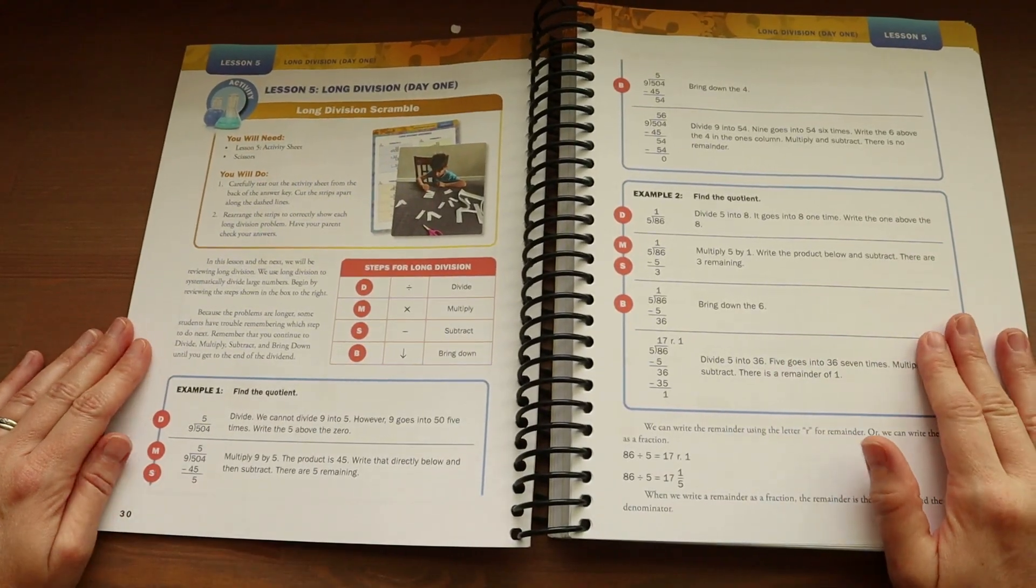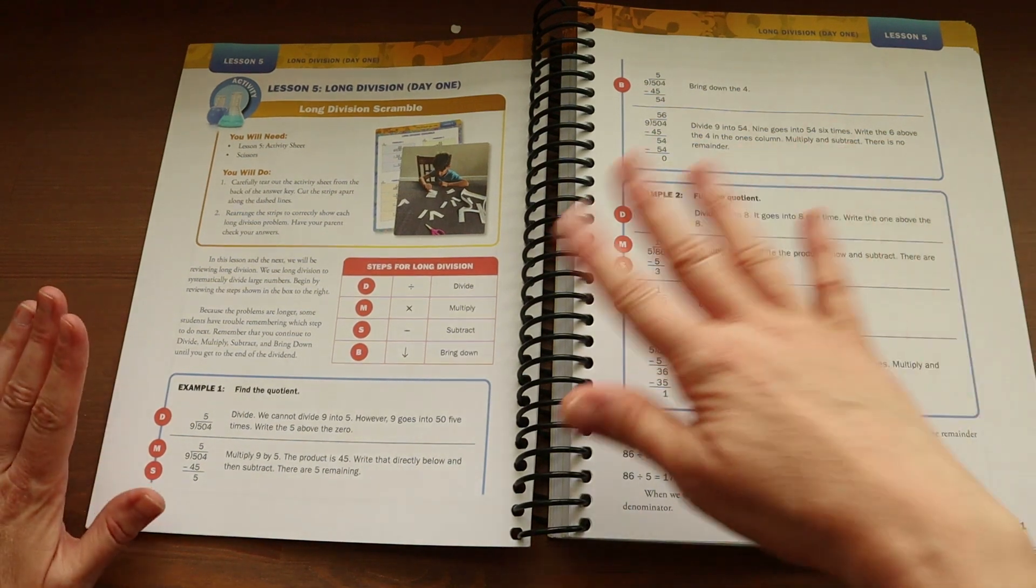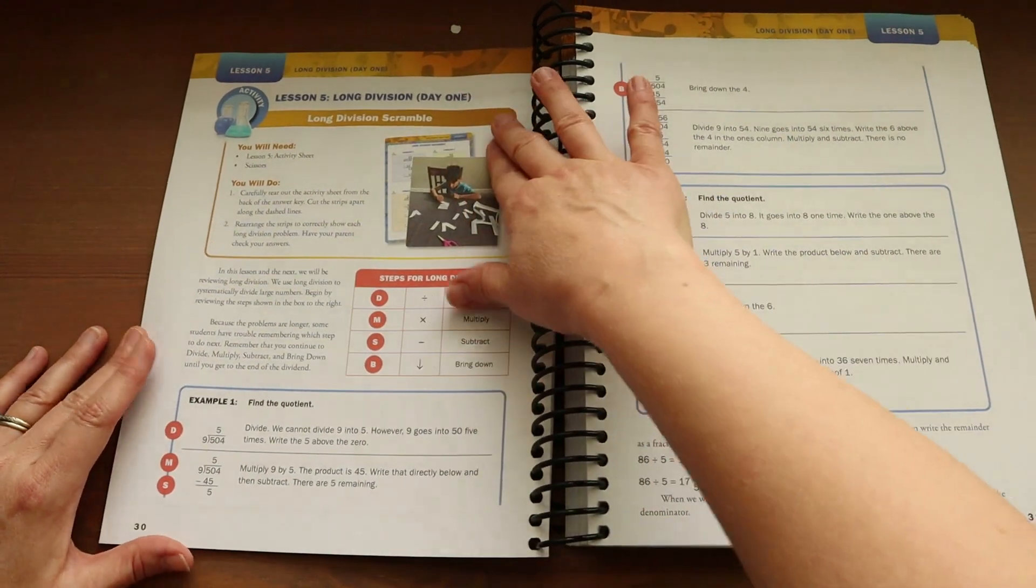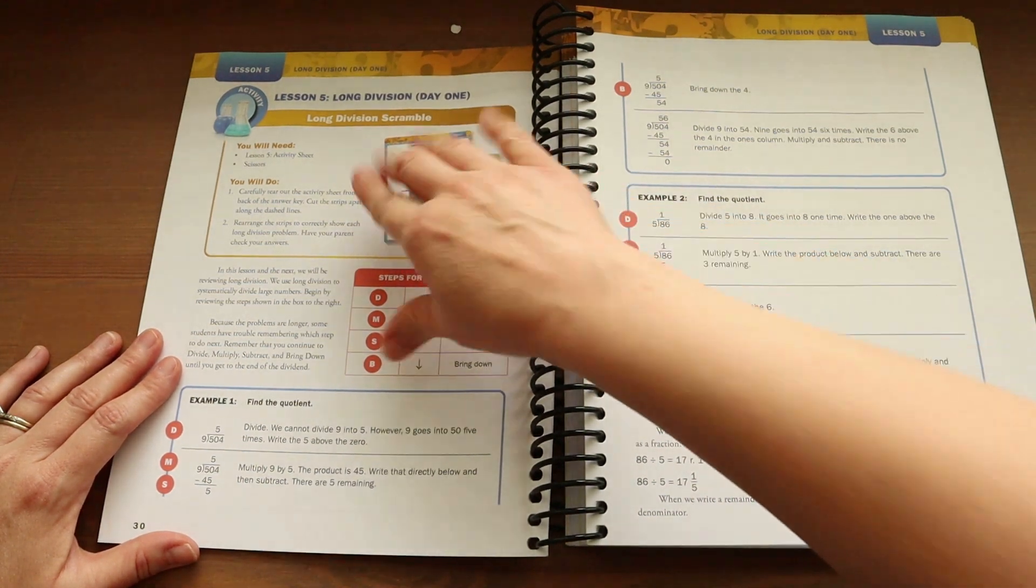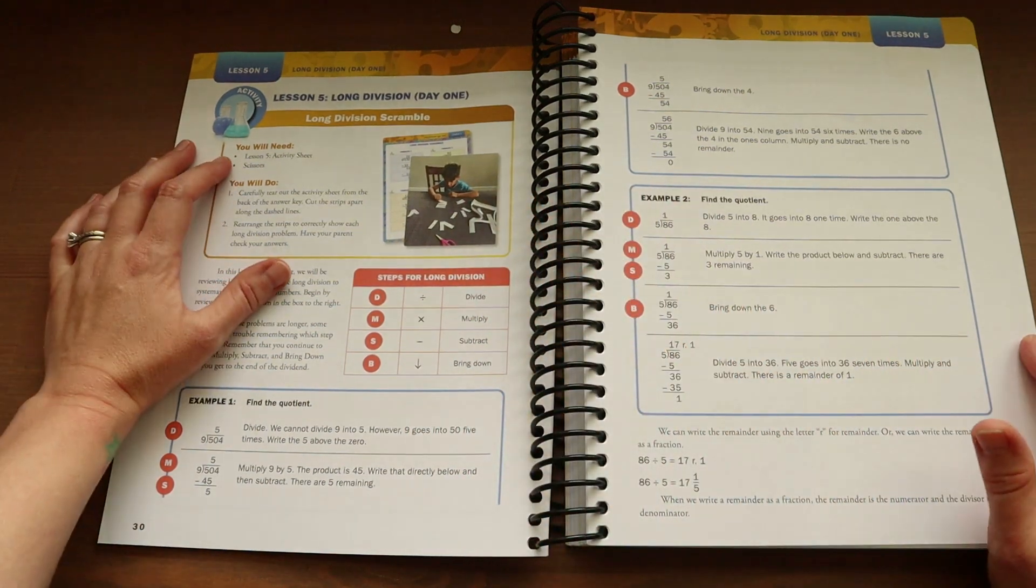Alright. So I'm going to show you guys one lesson at the beginning of the book, and then I'll flip to the very end and show you another lesson. So you kind of get an idea of like start to finish and what that looks like. So lesson five, you're going to be working on long division. And so you're going to do your five to 10 minutes of the skills practice that I just showed you guys.